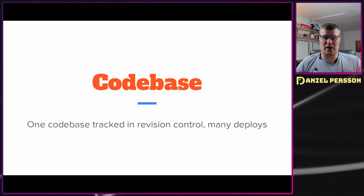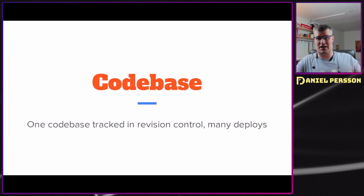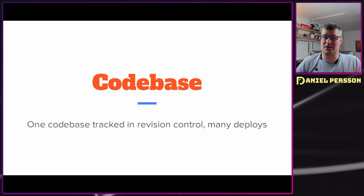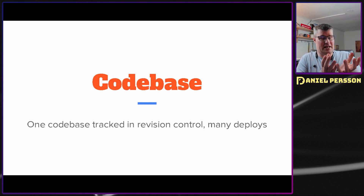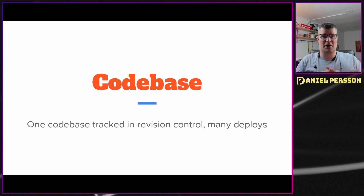First off we have codebase. In codebase we are talking about the actual different services and code that you are working on, and you need to have them tracked under revision control. So you need to actually track them in git, subversion, mercurial, or whatever, but you need to track them in one place.